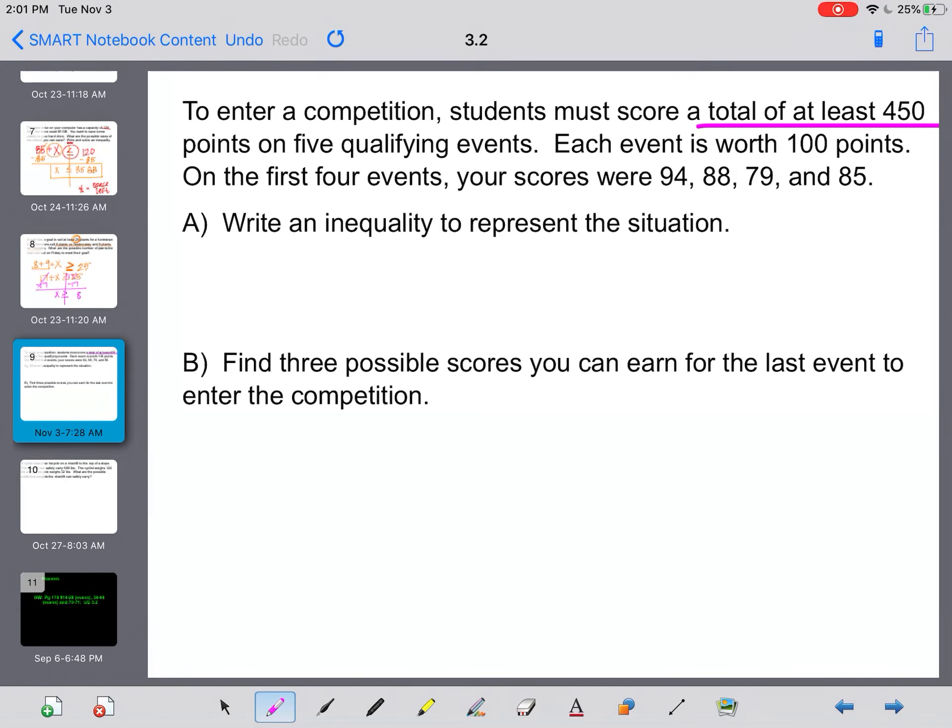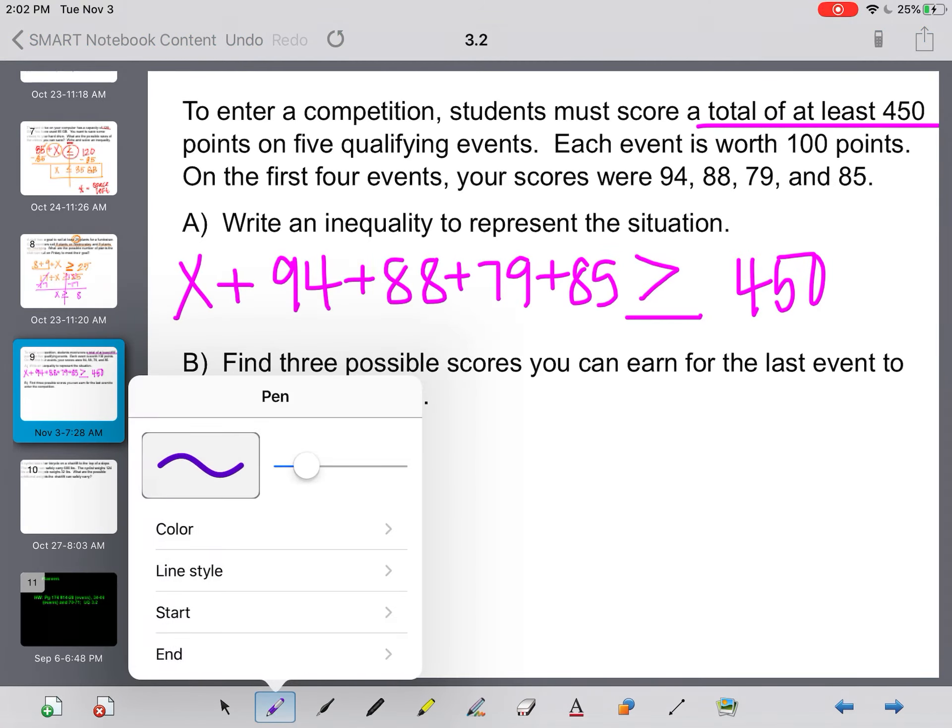To enter a competition, students must score a total of at least 450 points on five qualifying events. Each event is worth 100 points. On the first four events, the scores were 94, 88, 79, and 85. Write an inequality to represent the situation. Alright. Again, we know our total has to be at least, that means greater than or equal to. Alright. We have already, in the first four events, scored a 94 plus an 88 plus a 79 plus an 85. And we have one more, so we want to know what this last one has to be to get us the score that we need.